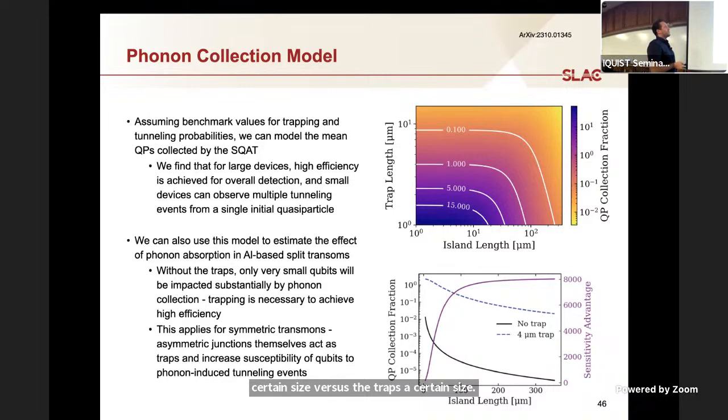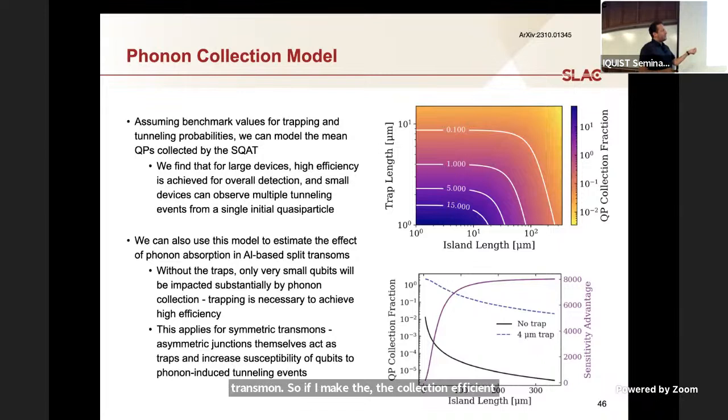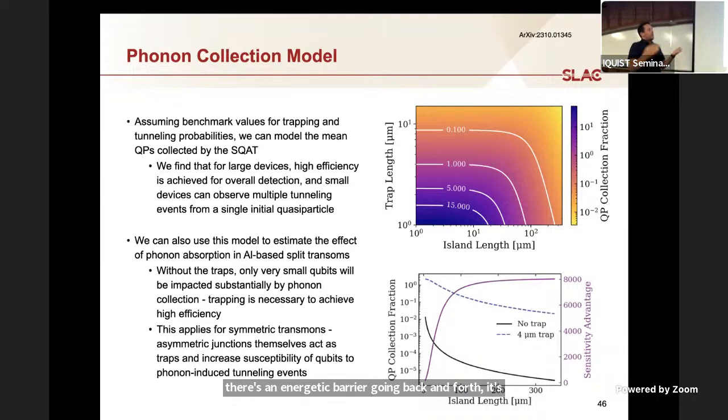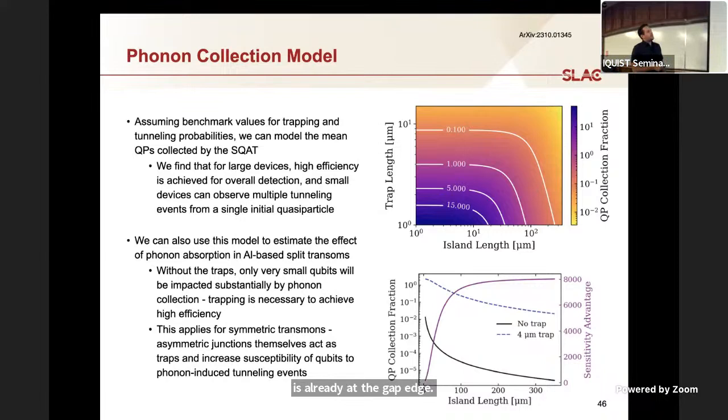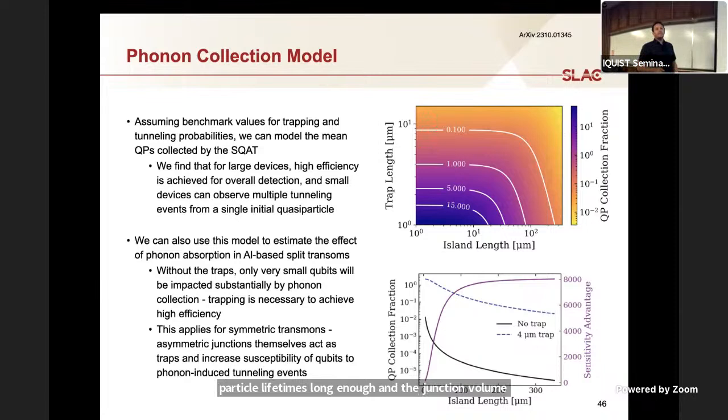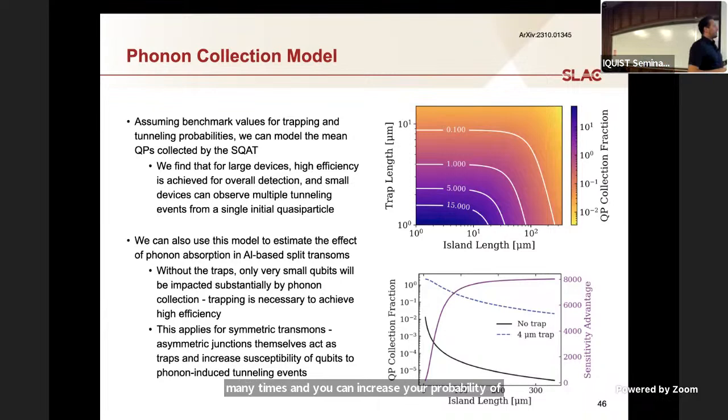0.1 would be a 10% efficiency. One would be a hundred percent efficiency. Using the trap, we can actually get efficiencies that exceed one. So this is why we call it a quasi particle amplifying transmon. If I make the collection efficient enough, I can actually get a gain factor. One quasi particle in my aluminum fin becomes something like 10 to 15 tunneling events in my junctions because I can actually get multiple tunneling events. This isn't an asymmetric junction where a tunneling event happens and then there's an energetic barrier to going back and forth. It's a symmetric junction. So if the tunneling happens one way, my quasi particle's already at the gap edge, you can tunnel back.